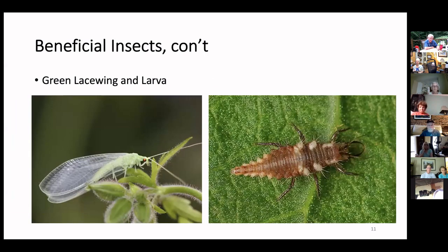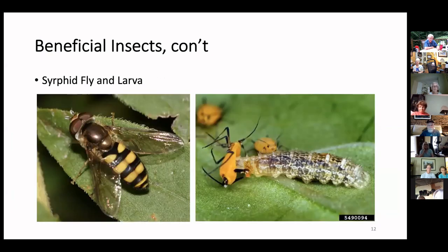This is a green lacewing and its larva — really good on aphids, mites, and smaller insects. Its larva looks ferocious. Next is a syrphid fly and its larva attacking an aphid. The syrphid fly is also a pollinator — it's a fly, not a bee, even though it looks like one. It's also called a flower fly.